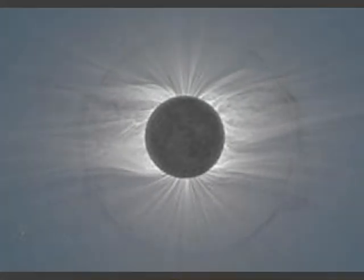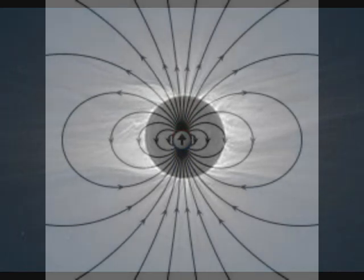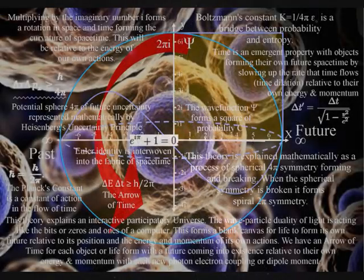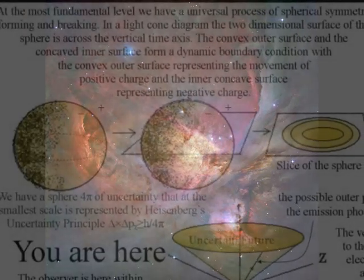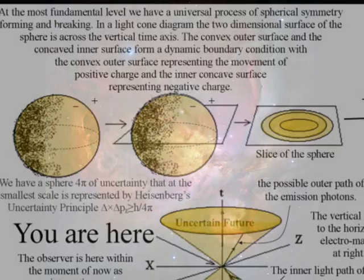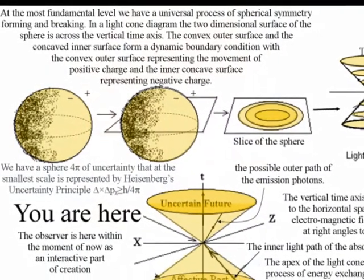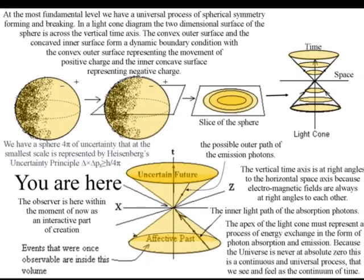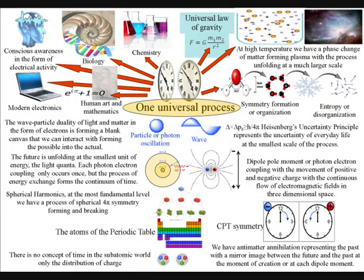This can be seen in a solar eclipse, when magnetic field lines can be seen in the sun's outer corona. Therefore, it is totally logical that we have one universal process from the cells within us to the stars above us. At the most fundamental level, this is a process of spherical symmetry forming and breaking relative to the atoms of the periodic table. The reason why there is something rather than nothing is that a process of spherical symmetry forming and breaking will naturally form entropy or disorganization, with a built-in potential for ever greater symmetry formation. The future is not based totally on uncertainty — it is based on broken symmetry relative to the structure of the atoms.